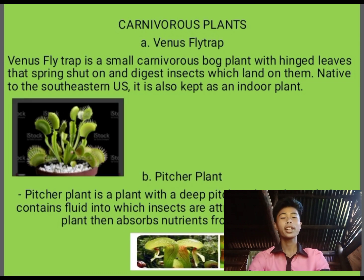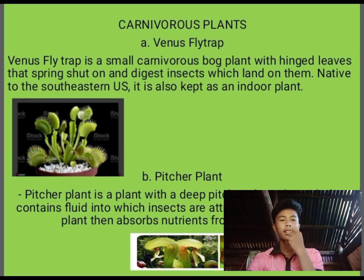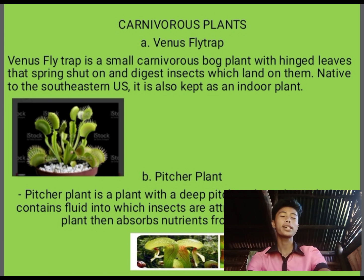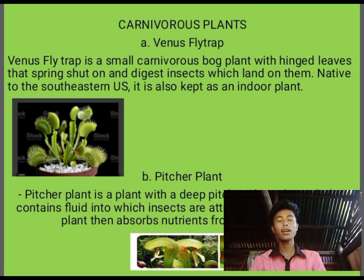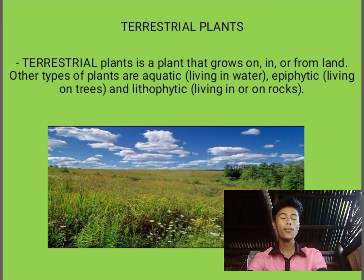Let us now move on to carnivorous plants. Carnivorous plants are plants that eat or kill other animals or insects. The first is the Venus flytrap — it is like a mouth that closes over insects when they touch it. The second is the pitcher plant — it is shaped like a pitcher, and insects that enter it cannot escape and will die inside.